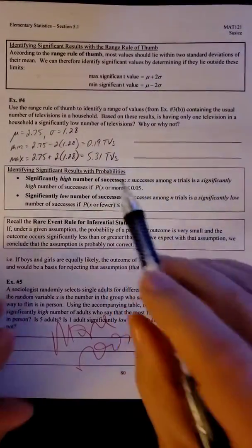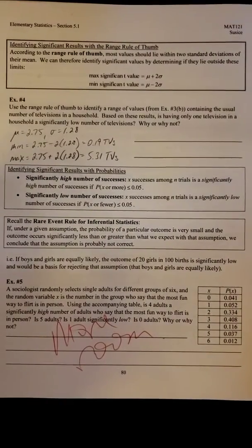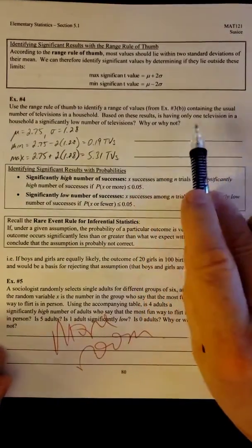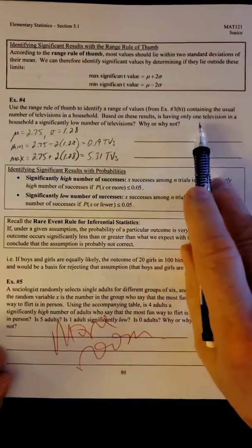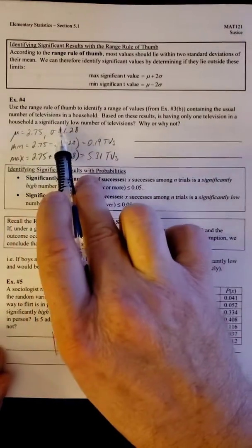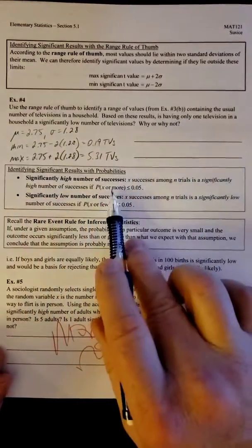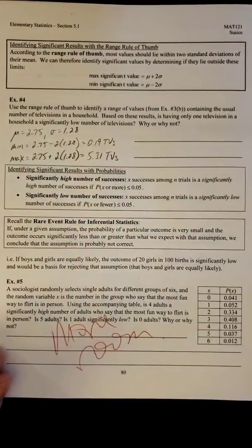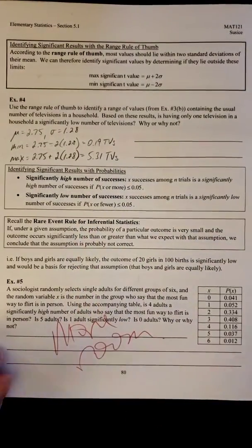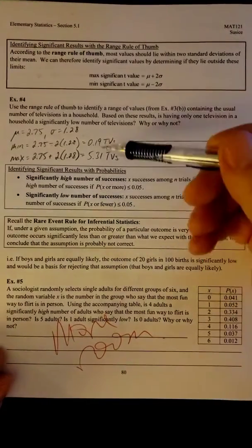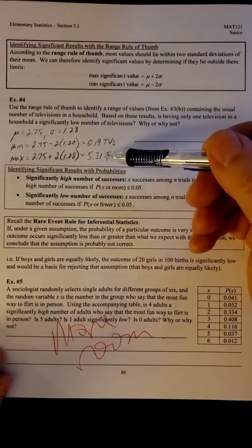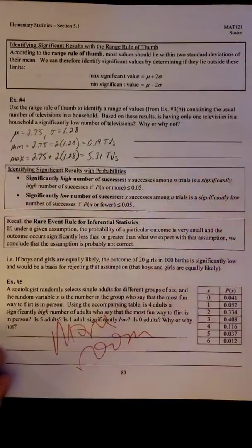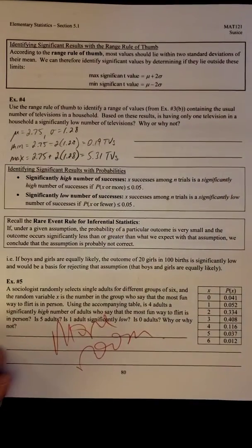So now we know what those cutoffs are for this particular problem, so now we can answer the question. Is having only one television in a household a significantly low number of televisions? Why or why not? So 1 is in between. If it's in between, that means it's not significant. That's what we would typically expect. Somewhere between that many TVs up to that many TVs. So 1 television is not significant.